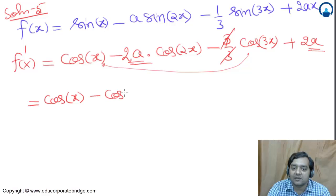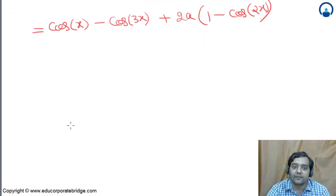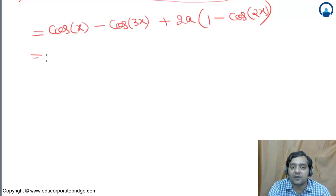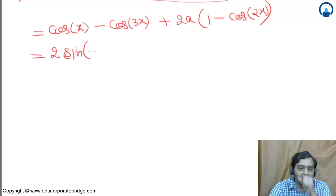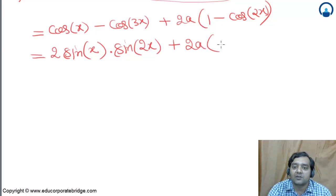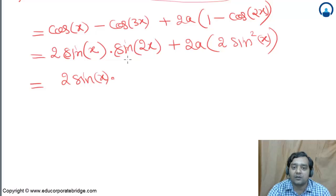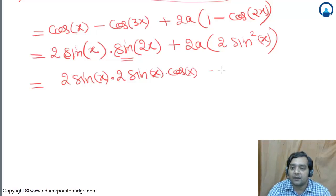Now applying trigonometric identities: cos x - cos 3x = 2 sin(2x) sin(x), using the difference-to-product formula. And 1 - cos 2x = 2 sin²x. So f'(x) = 2 sin x · sin 2x + 4a sin²x. Substituting sin 2x = 2 sin x cos x, this becomes 4 sin²x · cos x + 4a sin²x = 4 sin²x (cos x + a).